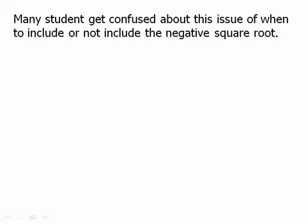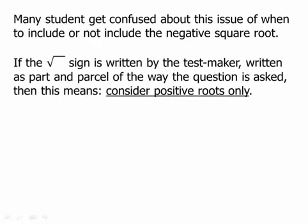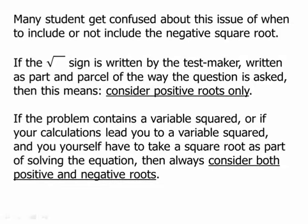Many students get confused about whether to include or not the negative square root. It turns out there's a very easy rule. If the radical sign is printed by the test maker as part of the question, then that means consider positive roots only — that's always what that sign means. But if the problem contains a variable squared, or your calculations lead to a variable squared, and you yourself have to initiate the act of taking a square root, then you always have to consider both the positive and negative roots. Whether the radical sign is printed on the test or not makes all the difference.